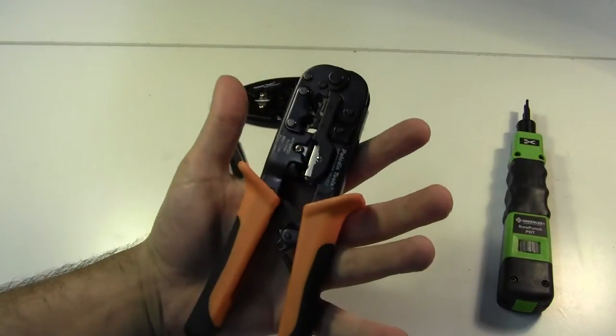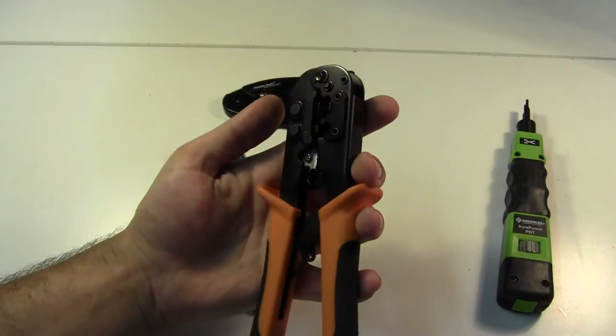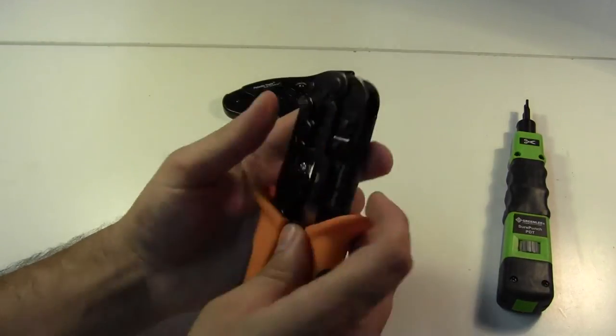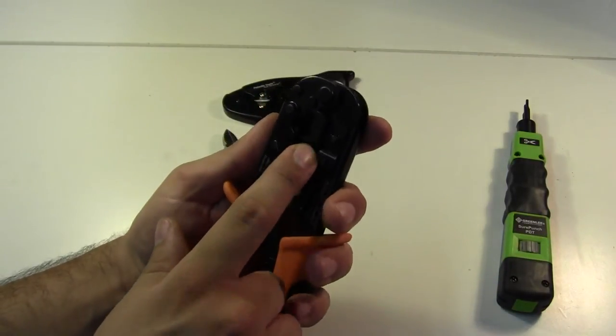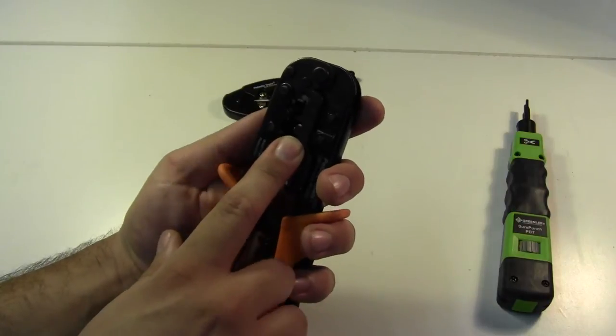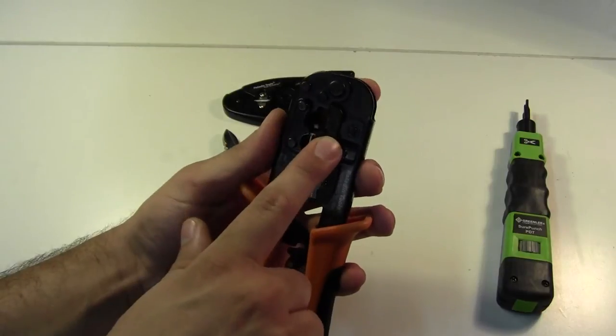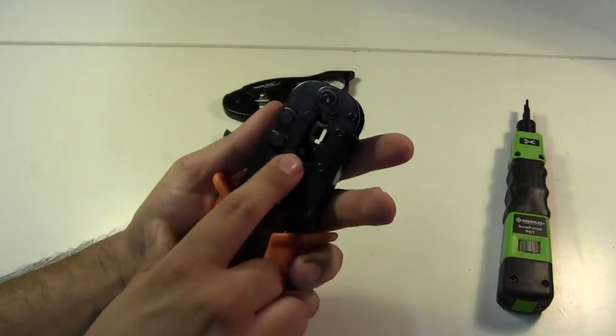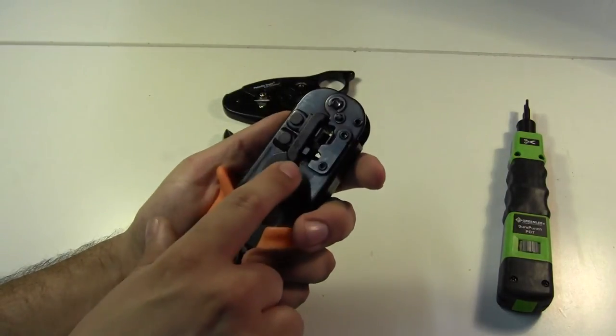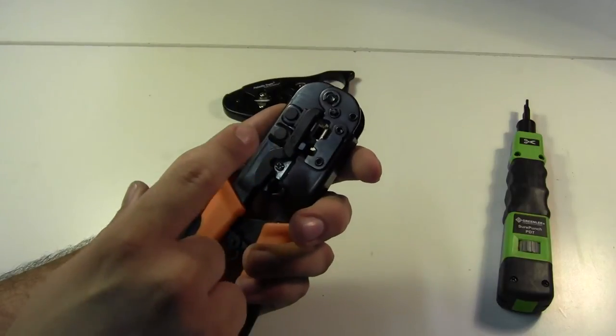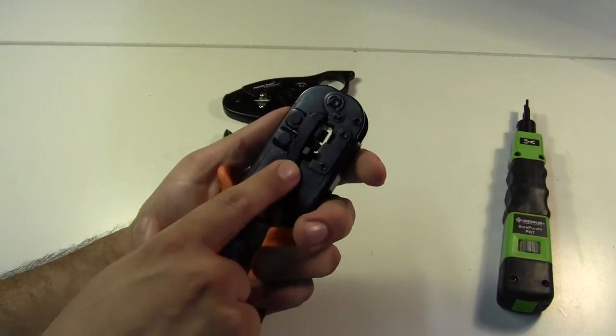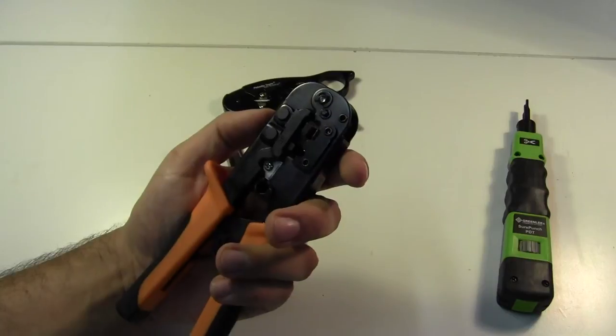First you've got your RJ crimping tool. So what this has is it's got a spot for 8p8c, 6p6c, and 4p4c. So you can do Ethernet cables, telephone cables, and then typically for 4p, that's your telephone handset, the cable that goes between the handset and the base of your telephone is 4p4c.